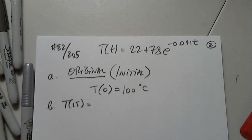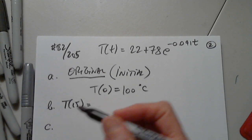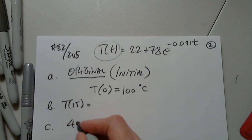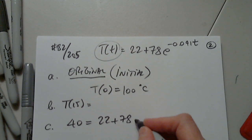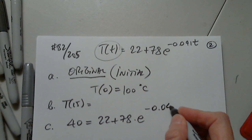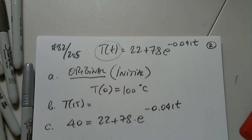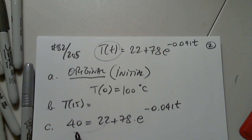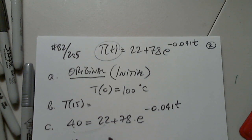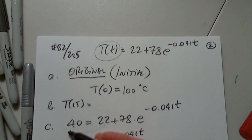Part C: When will the water temperature be 40 degrees? So 40 equals 22 plus 78 times e to negative 0.041t. We subtract 22 from both sides to get 18, then divide by 78, giving us 18/78 equals e to negative 0.041t.